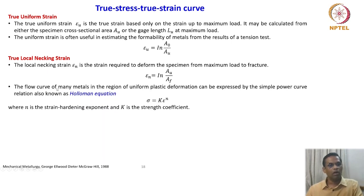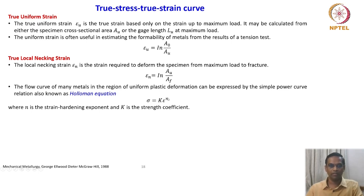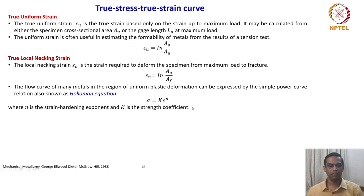The flow curve of many metals in the region of uniform plastic deformation can be expressed by a simple power curve relation, also known as the Hollomon equation: sigma = K times epsilon to the power n. This is a very popular empirical relation. It is valid up to maximum load in the stress-strain curve, where n is the strain-hardening exponent and K is the strength coefficient. There are several other empirical relations used to approximate stress-strain behavior.